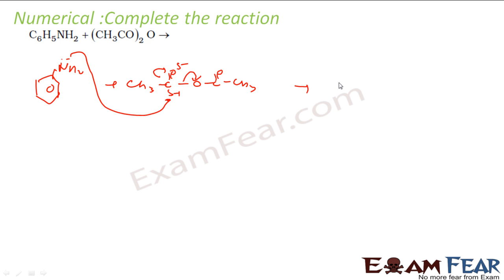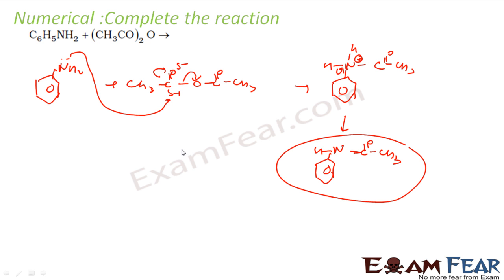This nitrogen attacks this carbon, this bond will break. What will happen is nitrogen with hydrogen, hydrogen, and COCH3. Since nitrogen gave electrons to this carbon, it's positively charged. Somebody has to leave - this hydrogen will leave. Hydrogen is a good leaving group, so you get this structure. This is N-phenyl ethanamide.